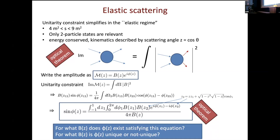One way to set this up is in the elastic scattering regime — between the two-particle and three-particle threshold — where you're guaranteed two-to-two elastic scattering. In this case, you can write the amplitude as a function of the scattering angle z (cosine theta), with an amplitude b and a phase phi. Knowing b, can you determine phi? The constraint is that the imaginary part of the amplitude equals an integral of the modulus squared, giving a non-linear integral equation. This equation is really hard to solve — there's no known algorithmic way to find solutions. But machine learning is great at this: you model the function with a neural network, use the constraint as a loss, and find the answer.